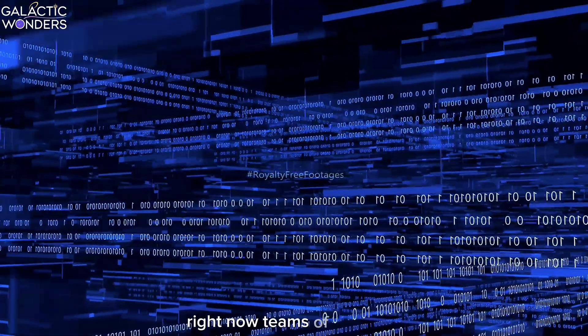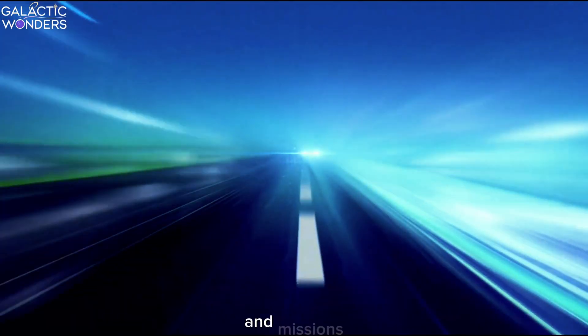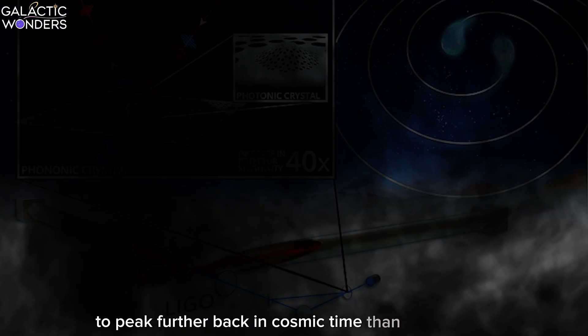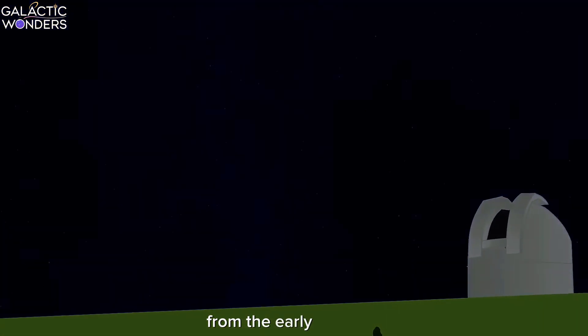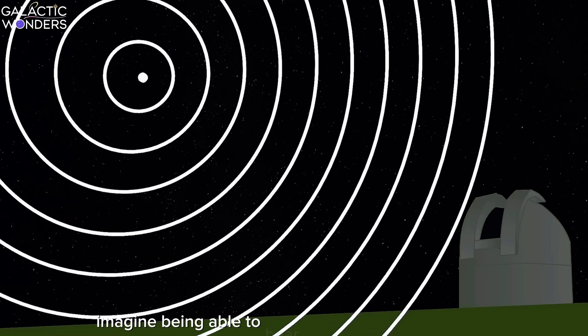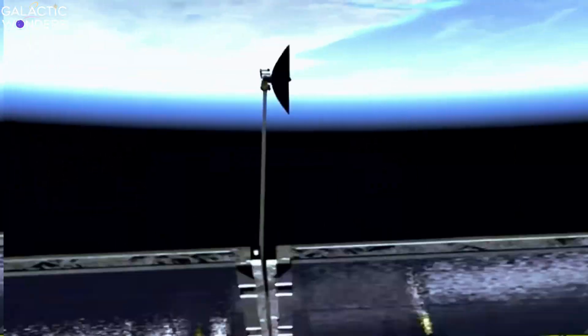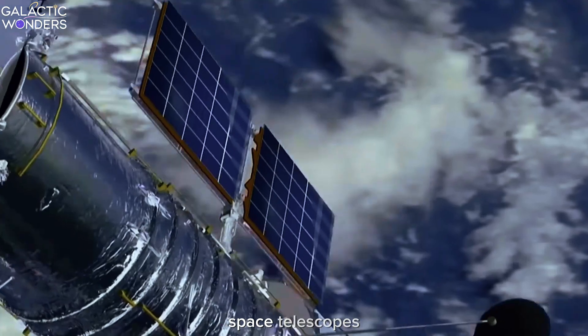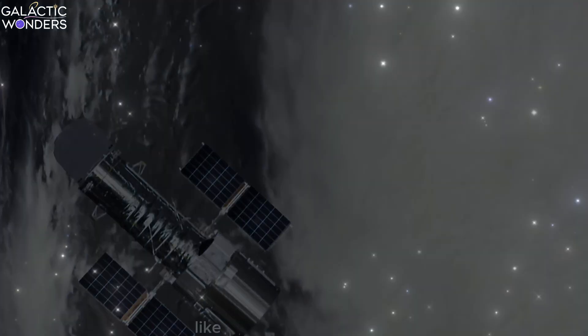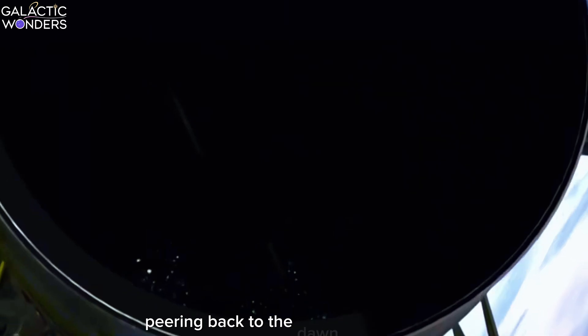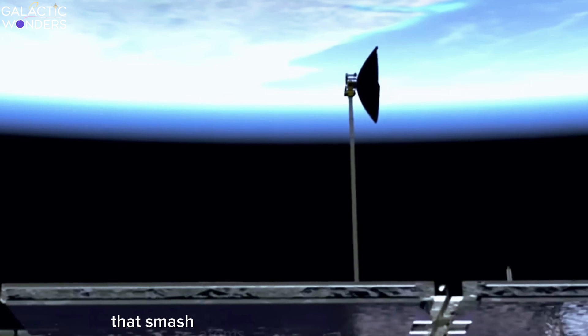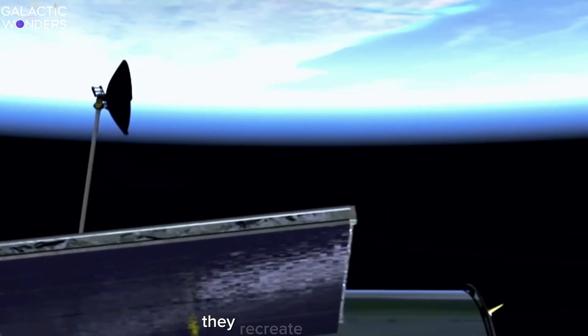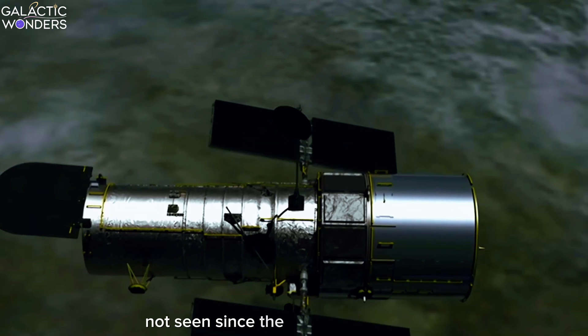Right now, teams of brainiacs are developing new experiments and missions to peek further back in cosmic time than ever before. We're talking about super-sensitive gravitational wave detectors that can feel the ripples in space-time from the early universe. Imagine being able to hear the echo of the Big Bang. Then there are next-gen space telescopes that can see the first light in the universe, like cosmic time machines peering back to the dawn of everything.